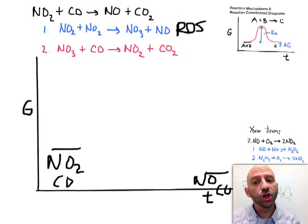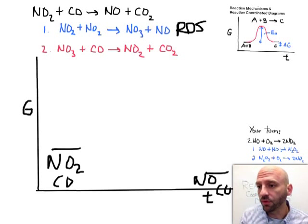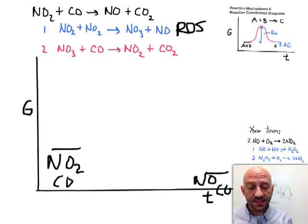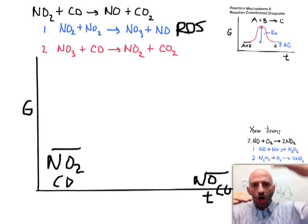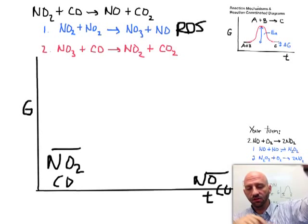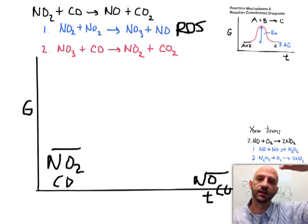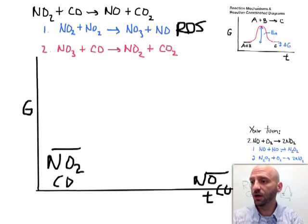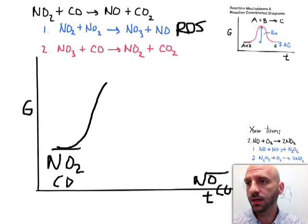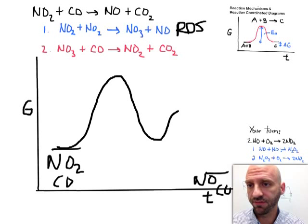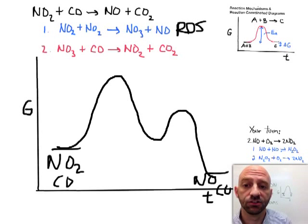It's going to be the bigger hill, right? The rate determining step dictates how fast the reaction can happen. Just like a real hill, a taller thermodynamic hill—or a taller kinetic hill I should say—is going to take longer to get over than a smaller one. So when I draw my pathway here, I'm going to start off with a big hill and then have a second smaller hill that leads to products.